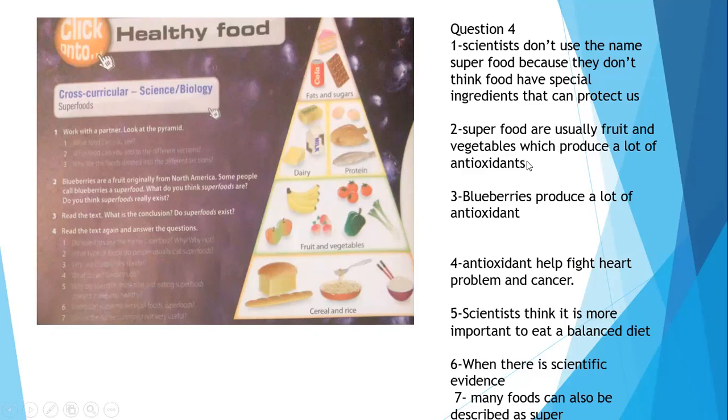Number three, why are blueberries special? Blueberries produce a lot of antioxidants. Number four, what do antioxidants do? Antioxidants help fight heart problems and cancer. Number five, why do scientists think that just eating superfood doesn't make you healthy? Scientists think it is more important to eat a balanced diet.